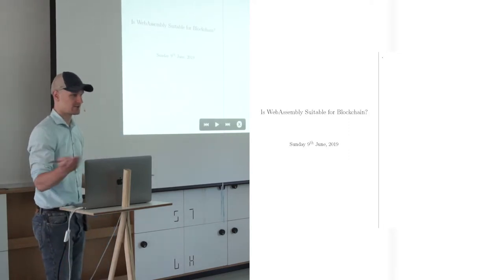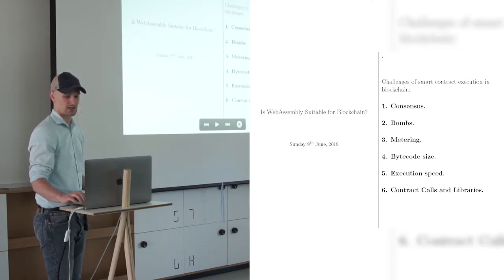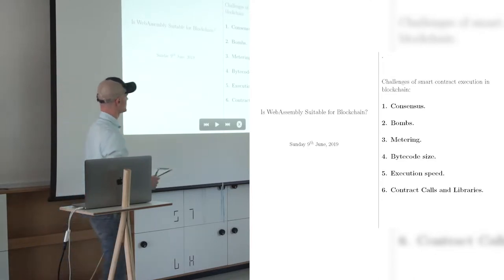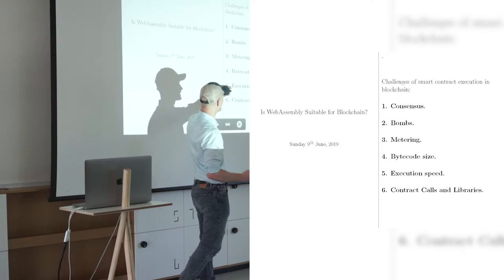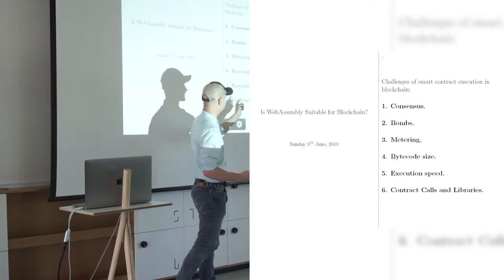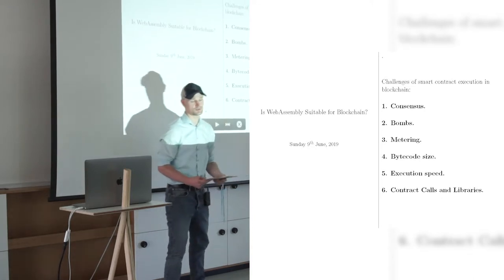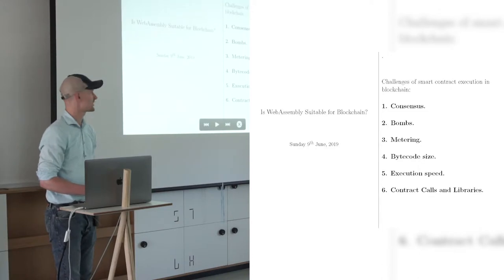So we have Parity's view and maybe EWASM's view of certain situations. When you are planning to use an execution engine, you have a lot of different questions that are unique to blockchain. Maybe WebAssembly people are asking questions about size and speed, and maybe some sort of interactions between modules, but we have sort of other, well maybe they're asking questions about bombs as well. But we have some unique things to blockchain that have to be addressed.